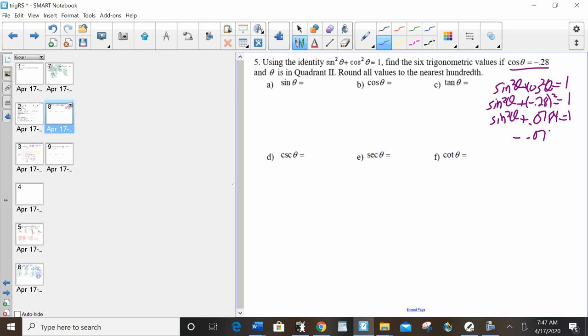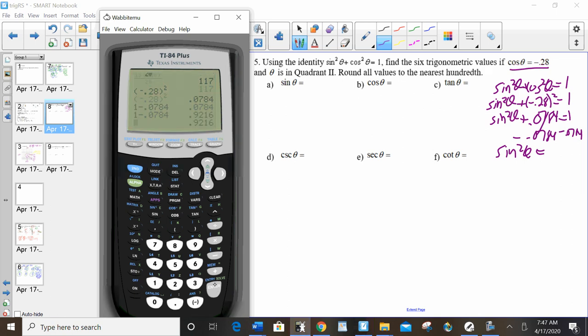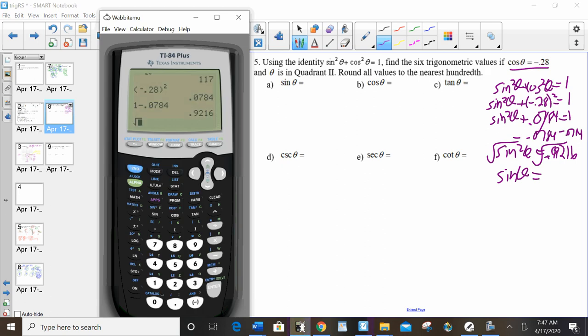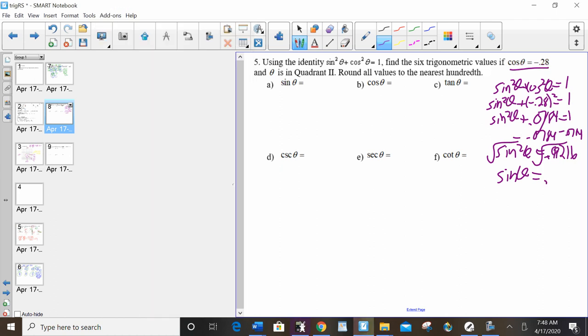Negative 0.28 squared is 0.0784. Subtract 0.0784. It's a little messy, sorry. 1 minus 0.0784 is 0.9216 square root sine theta equals. Second radical, second answer, 0.96. So sine is 0.96. Cosine is, I'm just going to write 0.28 for now. Again, I like to deal with a negative at the end. Now, tan is sine over cosine. So tan is 0.96 over 0.28.